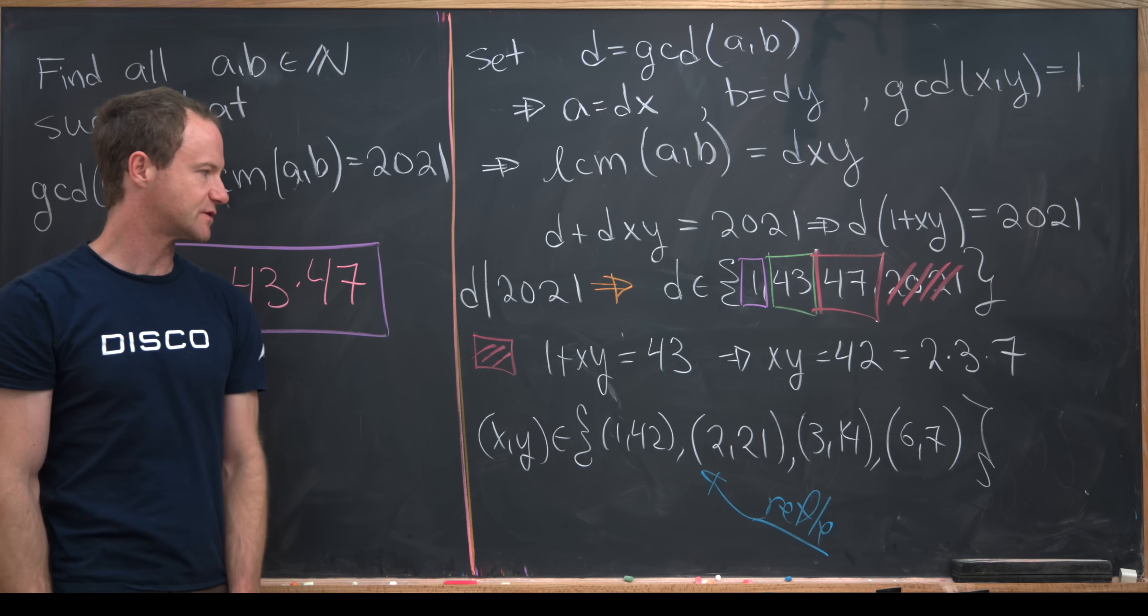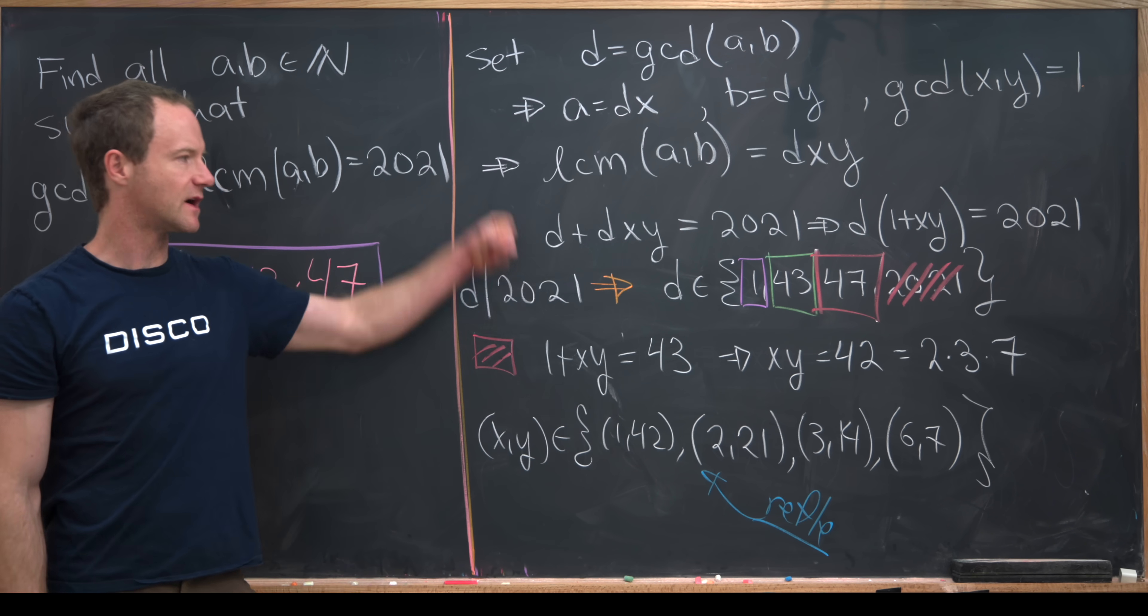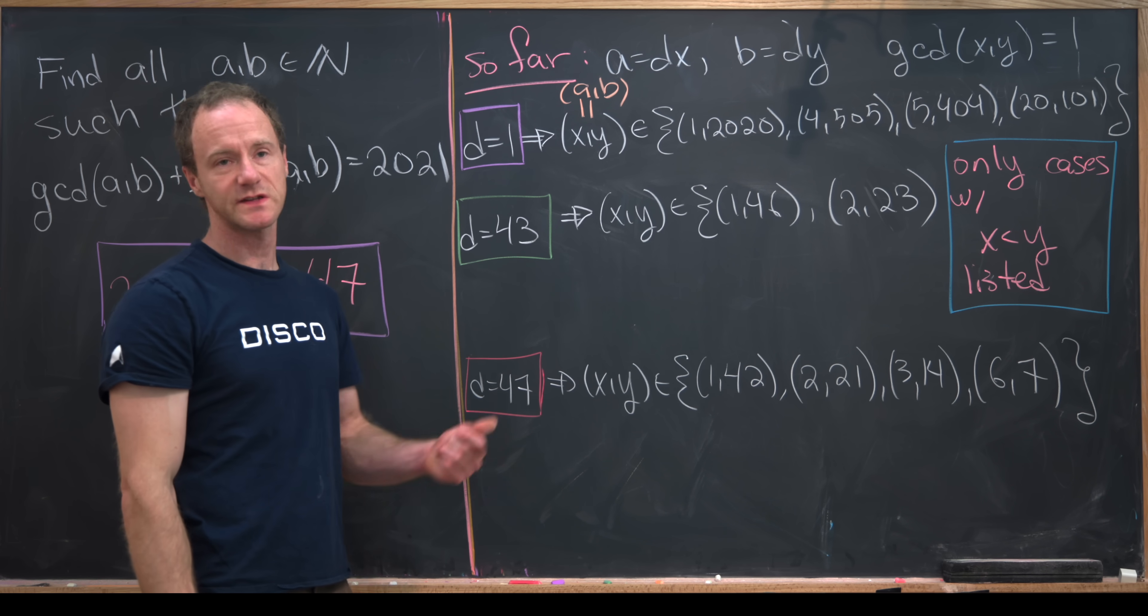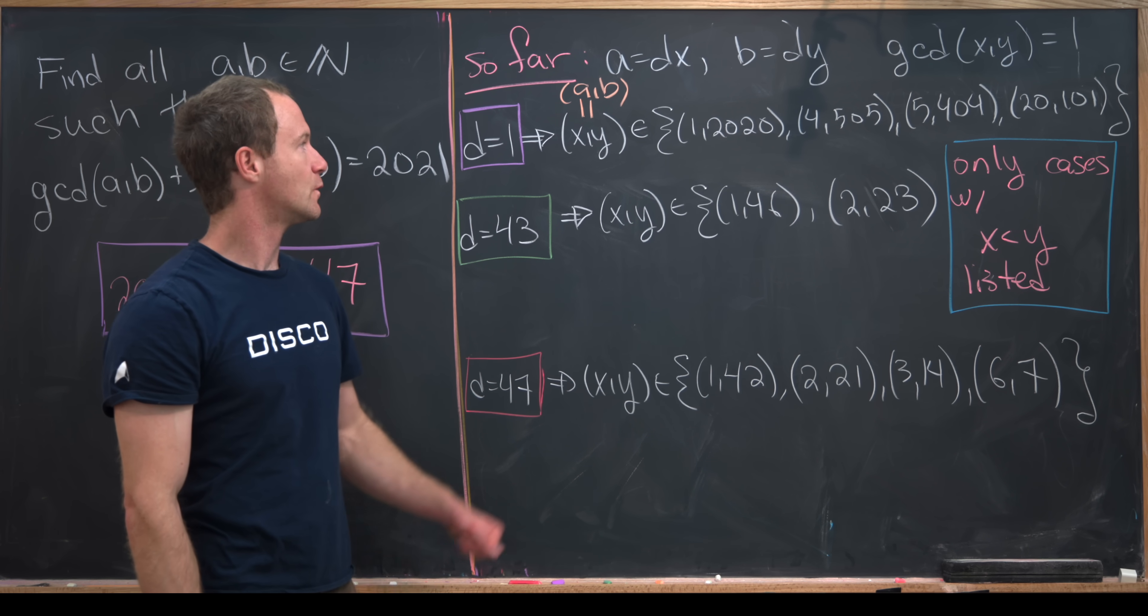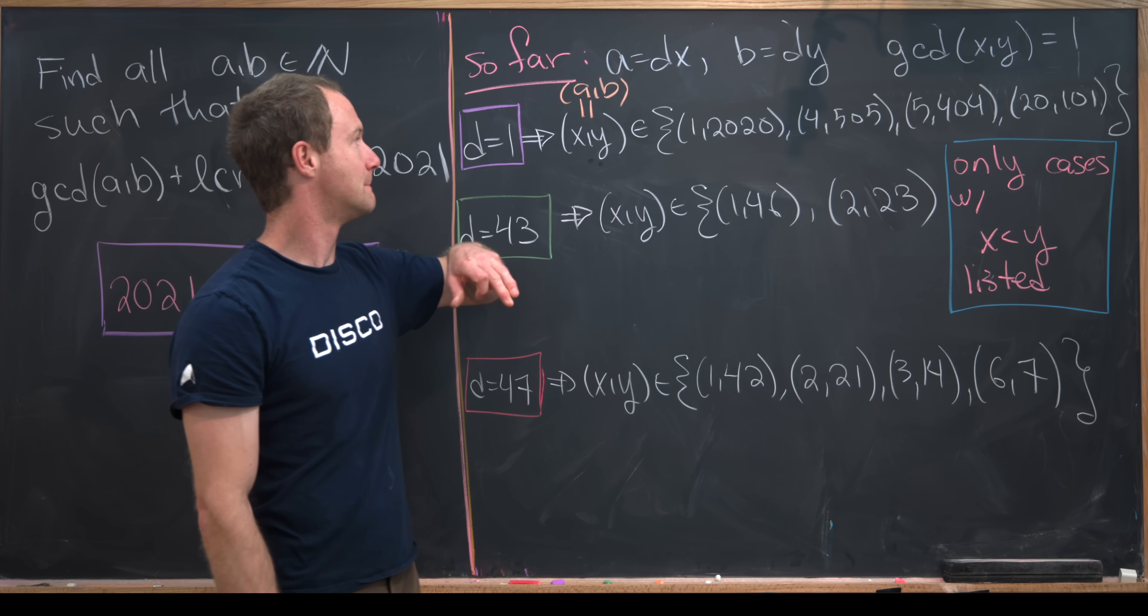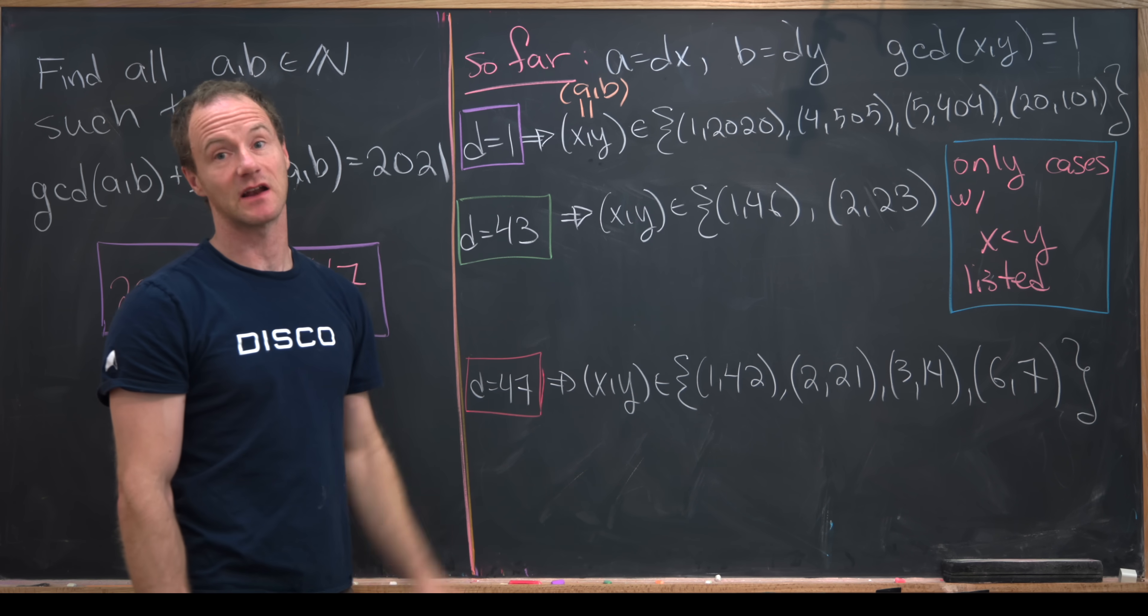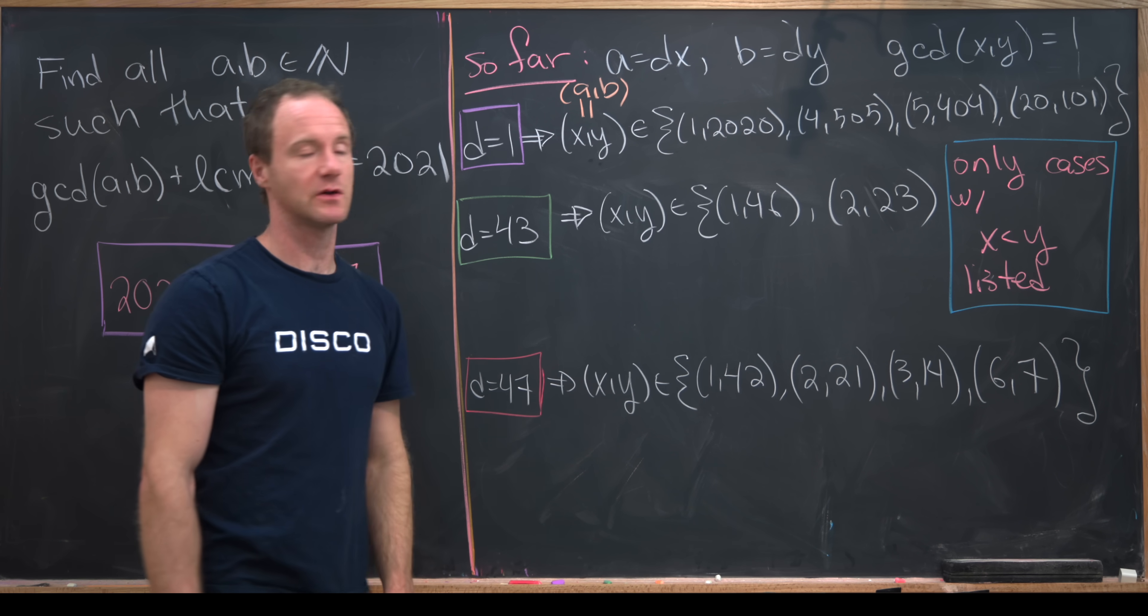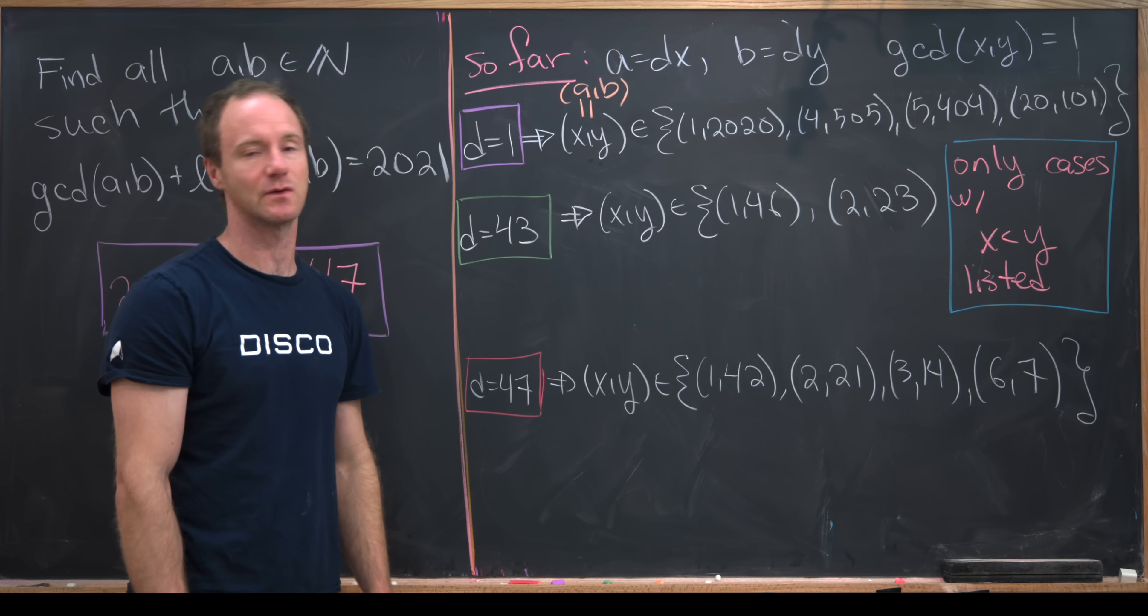Notice in each of these cases, we've just found the value of X and Y, not the value of A and B. Let's summarize everything and finish it off on the next board. Let's recall that we set A equal to D times X, B equal to D times Y, where the GCD of X and Y was equal to 1. That means that D was the GCD of A, B. When D was equal to 1, we got the following values for X, Y. But since D is equal to 1, X and Y are equal to A and B respectively. So this is actually the final answer in this case. We have A comma B comes from this following set and then the reflections. As a heads up, on the board I've only listed the cases when X is less than Y, so you'd have to look at all of the permutations of these as well.